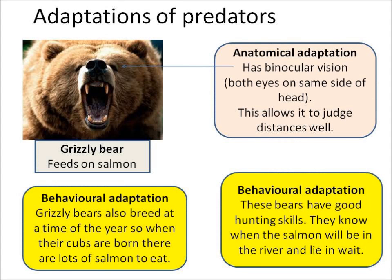Let's look at some adaptations of a bear, which is a predator. They have an anatomical adaptation: both their eyes are on the same side of their head — we call that binocular vision — and that helps it judge distances very well to find out how far away its prey is.